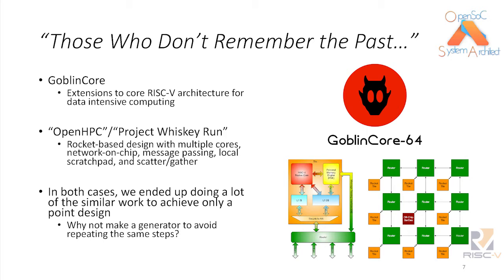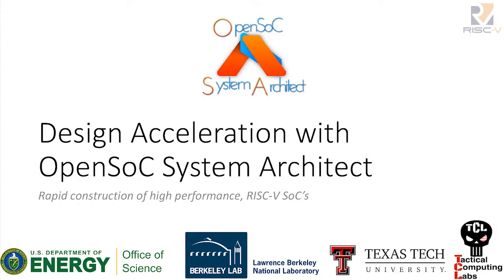Another motivation: those who don't remember the past are doomed to repeat it. We've been doing these point designs consistently over the past few years. Texas Tech did the Goblin Core Design, an extension to the RISC-V architecture for data-intensive computing. We have a point design called Whiskey Run — a multi-core design with a mesh network, message passing, a local scratchpad, and scatter-gather extensions. In both cases we found we were repeating a lot of the same steps, so we figured why not create a generator to handle all that. That's where OpenSOC System Architect comes in.